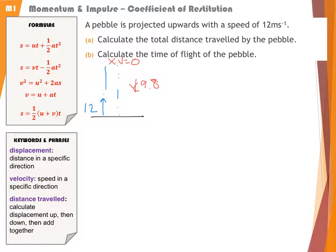If we were asked to find the total distance travelled by the particle, it's important that we don't just go from here to here, because the displacement will only tell us 0. But we want to know the distance. So we need to find the displacement to the top and times it by 2 because it's the same distance up and down.